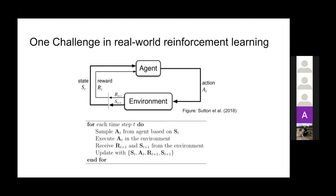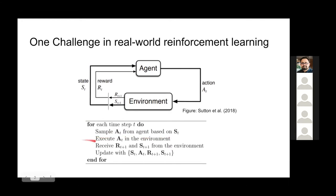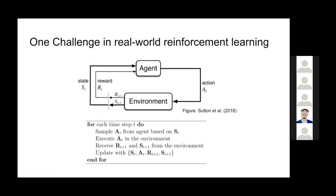Let's first get started with the agent-environment interaction loop in reinforcement learning, as shown here from the reinforcement learning introduction book. Based on this loop, we can implement the RL algorithm as follows: for each time step T, we sample action A_T from the agent based on current state S_T, execute A_T in the environment, receive reward R_{T+1} and next state S_{T+1}, and then the agent uses the transition data S_T, A_T, R_{T+1}, S_{T+1} to make a learning update. Most deep RL algorithms are implemented this way, and it is totally appropriate in simulated environments.